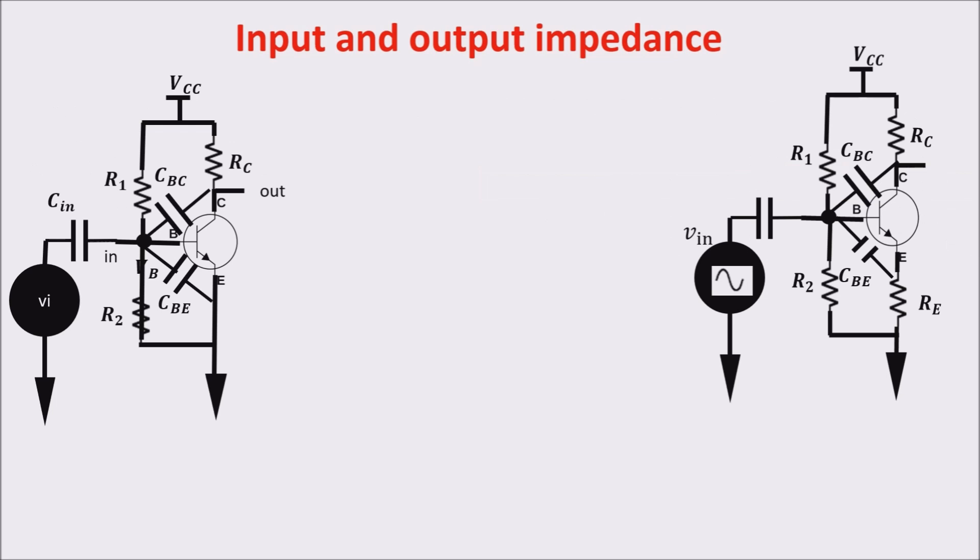Using our example of a BJT with and without the emitter degeneration resistor Re we see that the input resistance is this in the configuration without feedback and this other in the configuration with feedback where you see that Rπ is magnified by 1 plus Gm Re.